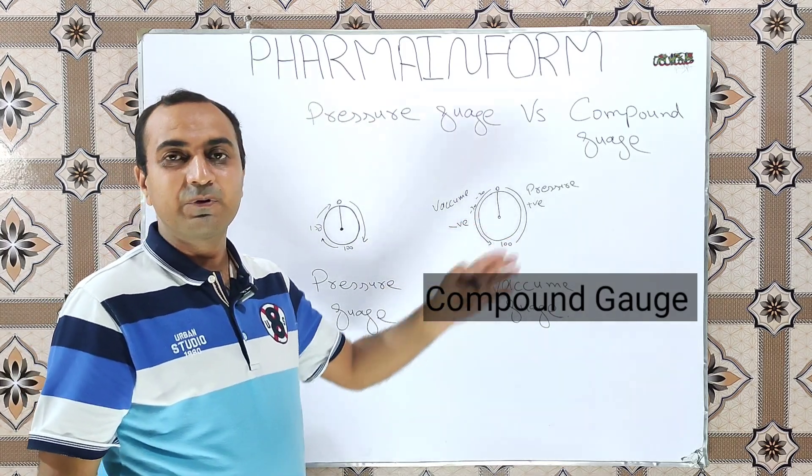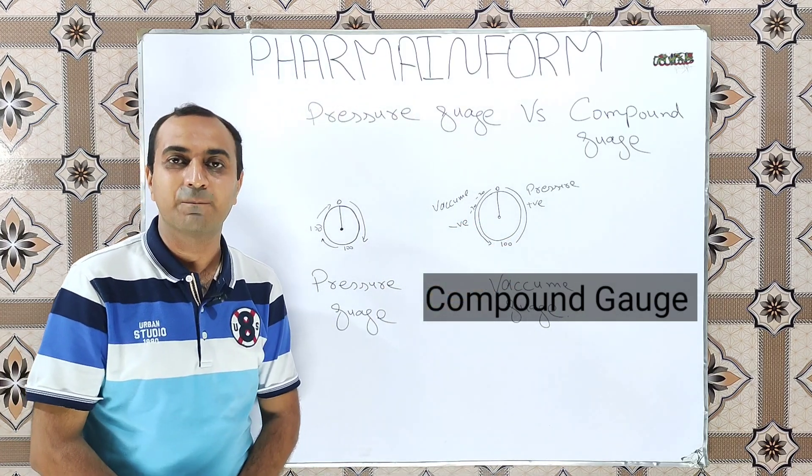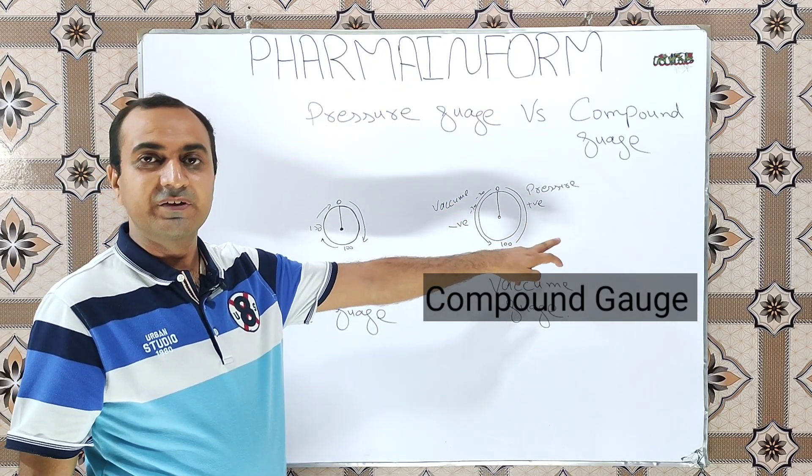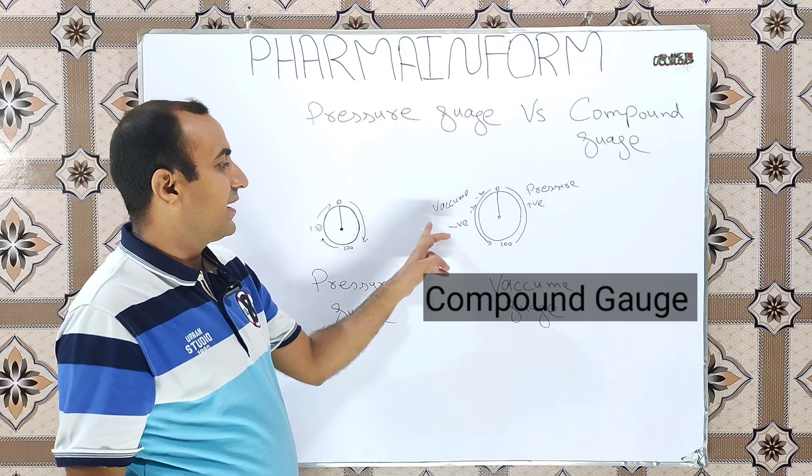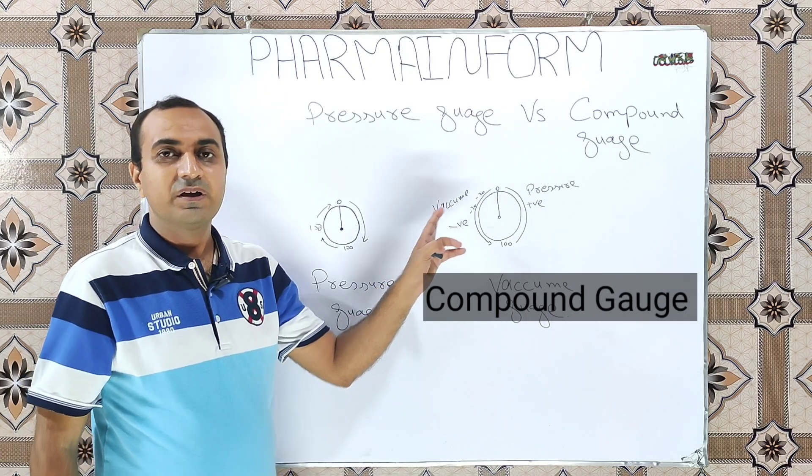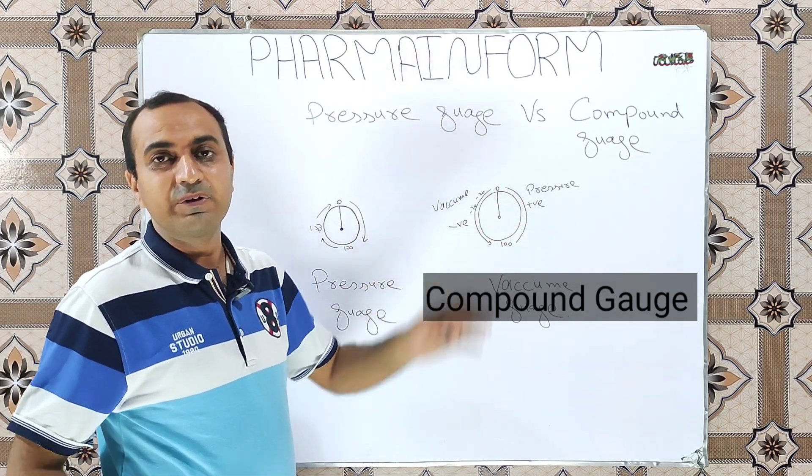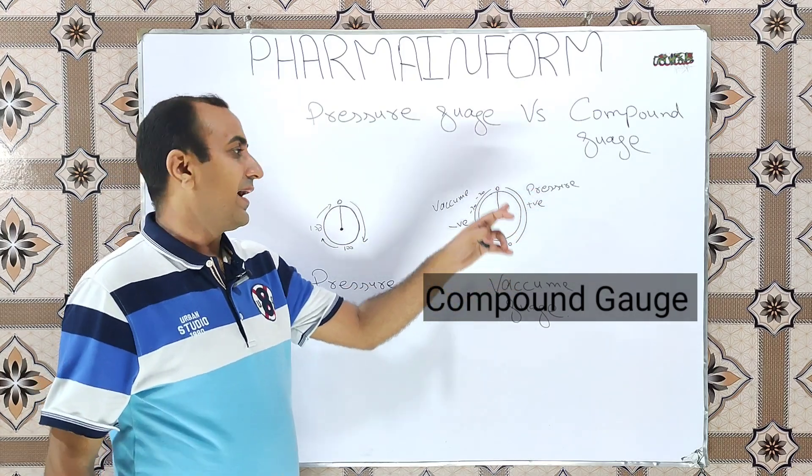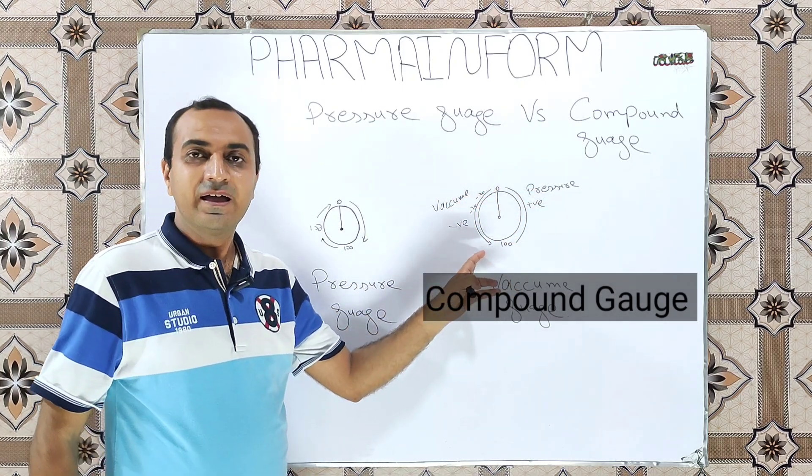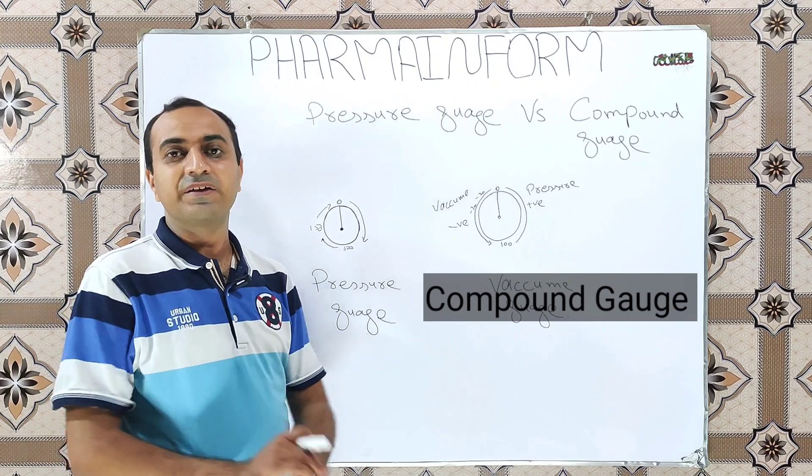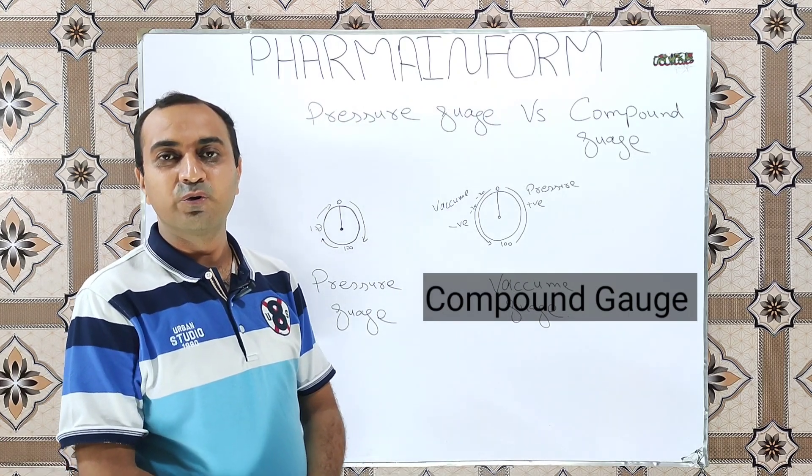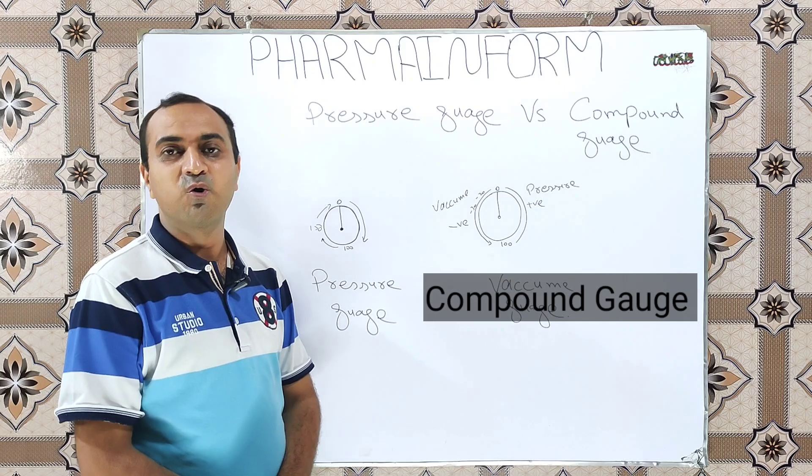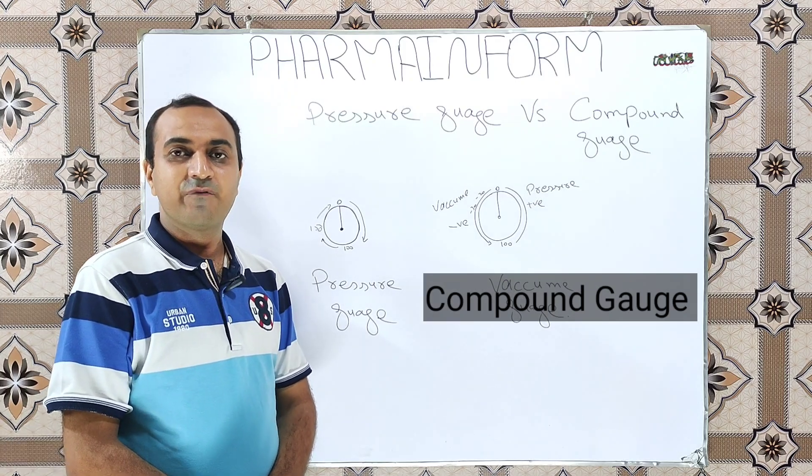So what is the purpose of compound gauge or what is the compound gauge? Compound gauge basically gives us two readings: one reading for the pressure and other reading for the vacuum. This gauge is marked with two values. One value is in positive digits and other value is in the negative digits. Compound gauges are installed on those equipments where we need to measure the value of both the pressure and vacuum.